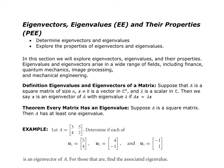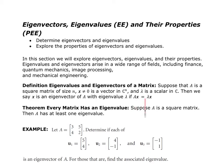Suppose A is a square matrix of size n, and we have a vector that is not the zero vector, with entries from complex numbers. Lambda is a scalar in the complex numbers — this can be brought down into the real numbers as well. Then we say x is an eigenvector of A with eigenvalue lambda if A multiplied by x equals lambda multiplied by x.